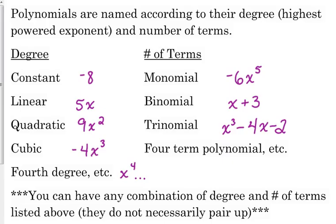And then you've got your number of terms. A monomial — negative six times x to the fifth are connected by multiplication, so that is one single term, that's why it's a monomial. A binomial has two terms because they're separated by a plus. I've got an example of a trinomial that has subtraction in it, and then you can keep going. They kind of lose their special names after the trinomial — you've got a four-term polynomial, et cetera.